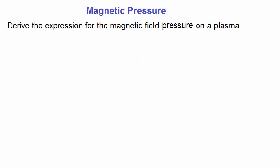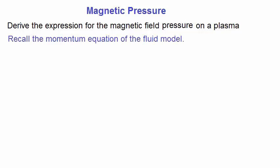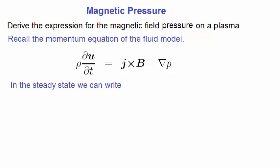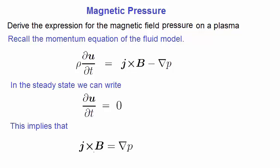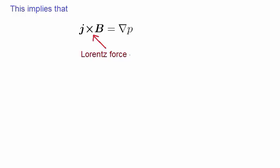Let's now derive an expression for the pressure applied on a plasma by a magnetic field. Recall the momentum equation from the fluid model of a plasma, given by this. In the steady state, where the drift velocity U is constant, we can let the derivative be zero. That means the right-hand side of the momentum equation can be written as follows. The left-hand side is the familiar Lorentz force term, without an electric field in this case, and it's equal to the force due to the plasma pressure gradient.